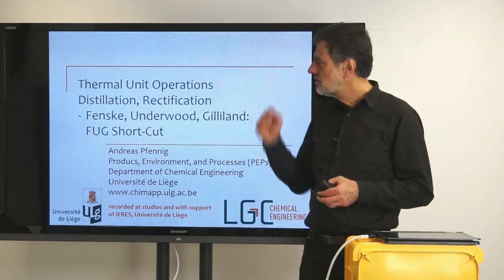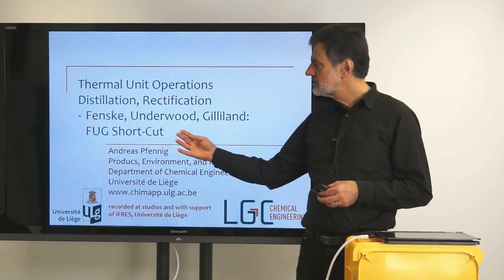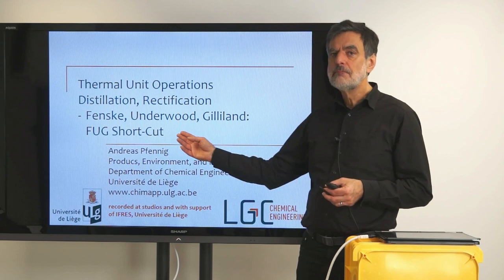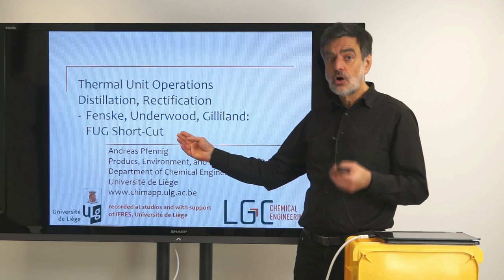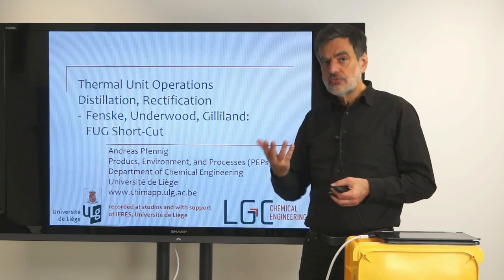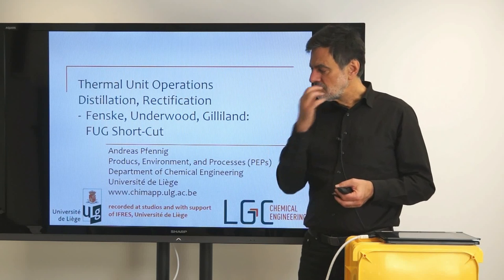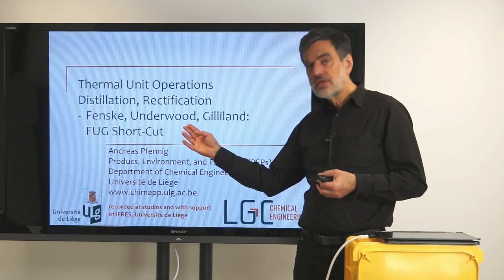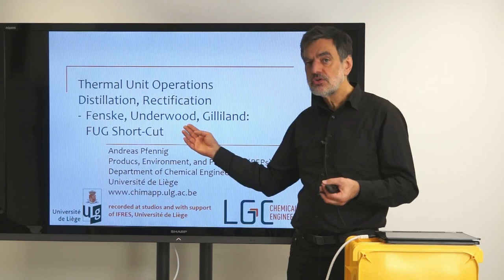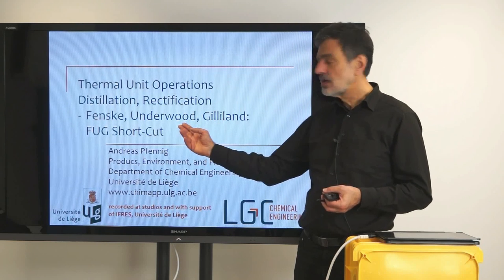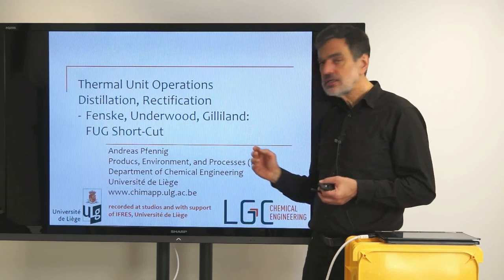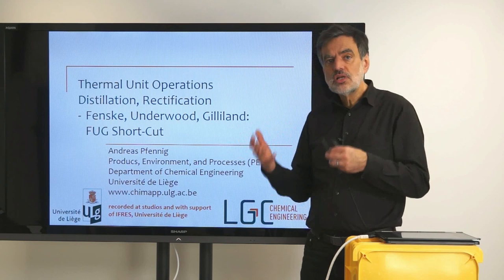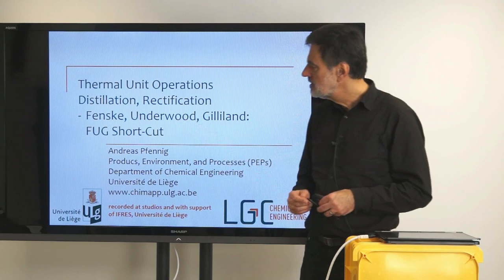Welcome again to this lecture on thermal unit operations. Last video we looked at the Fenske-Underwood-Gilliland method, the shortcut method, and we derived the equation of Fenske to determine the minimum number of theoretical stages for a given separation task. We know that the minimum reflux ratio is a very significant parameter, and that is determined with the Underwood equation. The Gilliland allows us to say something about how the number of theoretical stages and reflux ratio relate in a general case. So let's first have a look at the Underwood equation.